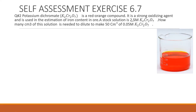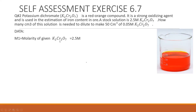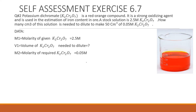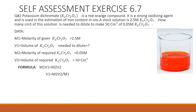The stock solution is given as M1 = 2.5 molar potassium dichromate. We need to calculate V1 — how much stock solution to take. The new solution: M2 = 0.05 molar, V2 = 50 cm³. Using the formula M1V1 = M2V2, we rearrange to V1 = (M2 × V2) / M1.